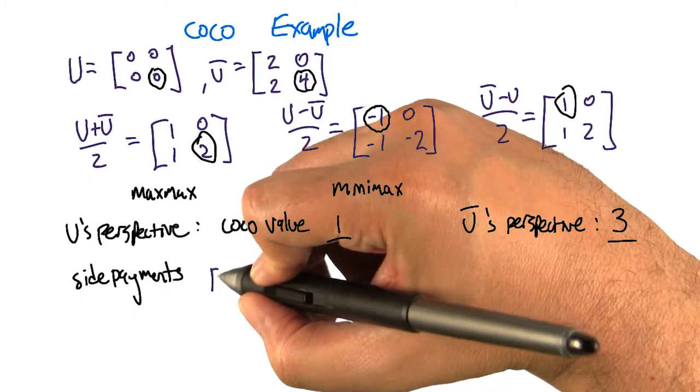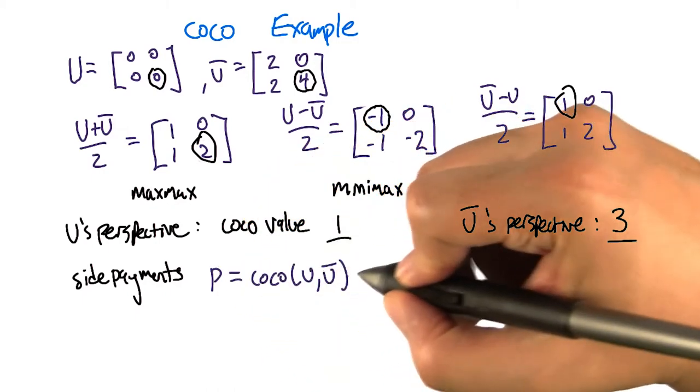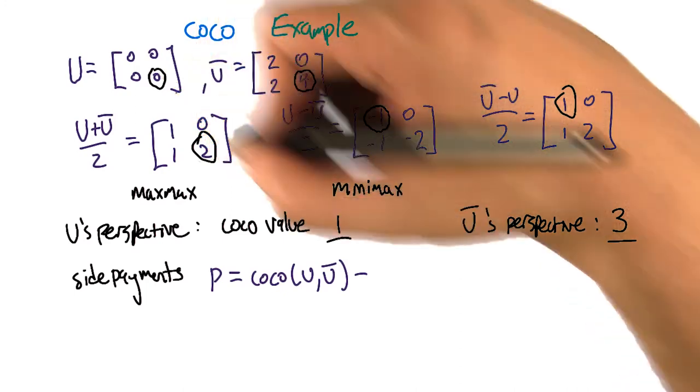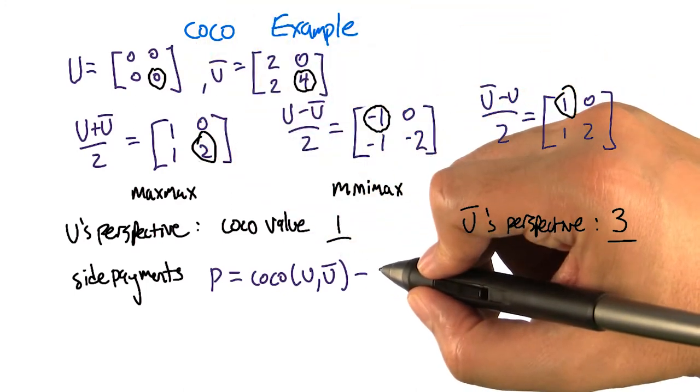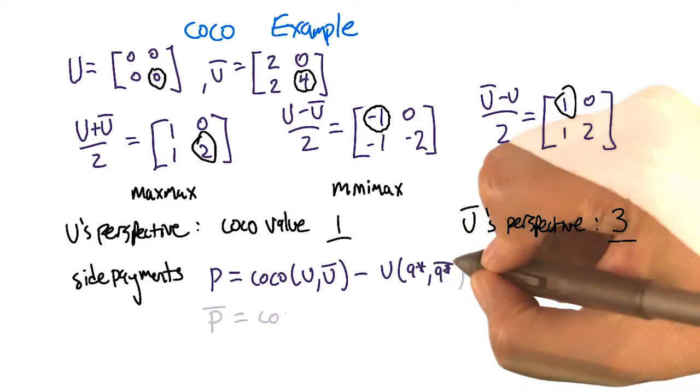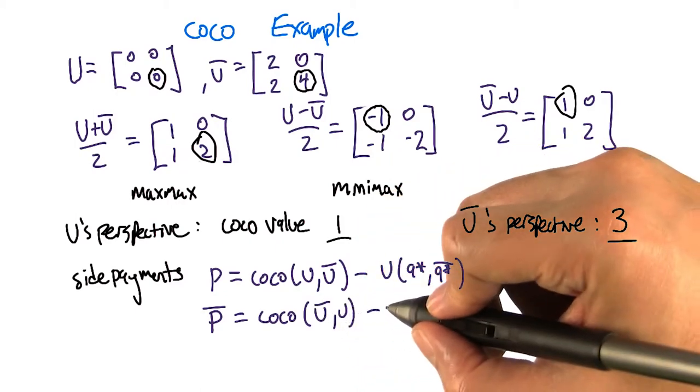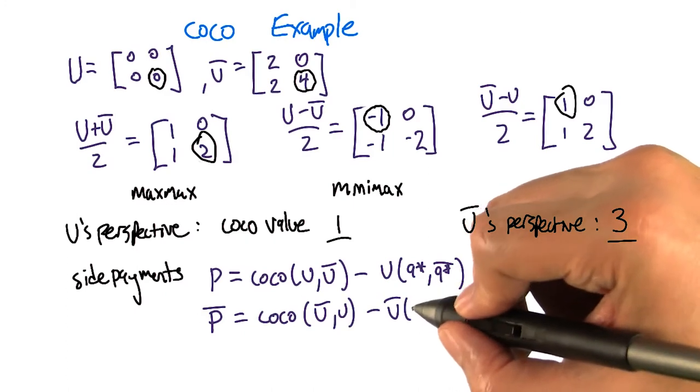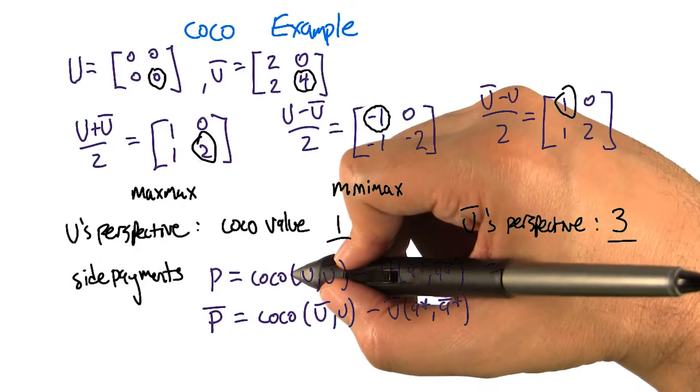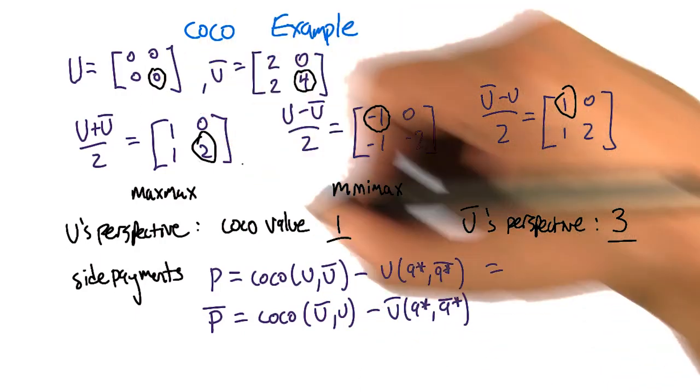Now we have to define side payments. So U's side payment P is the cocoa value from U's perspective minus the value that U gets in the equilibrium, which in this case is 0, but in general it's whatever the utility is according to U of the utility-maximizing joint action. And the side payments for U-bar are the cocoa value from the perspective of U-bar minus the value that U-bar gets in the utility-maximizing joint action. So in this case, that's 1 for U minus how much does U get in that game? 0. So it's going to be 1.